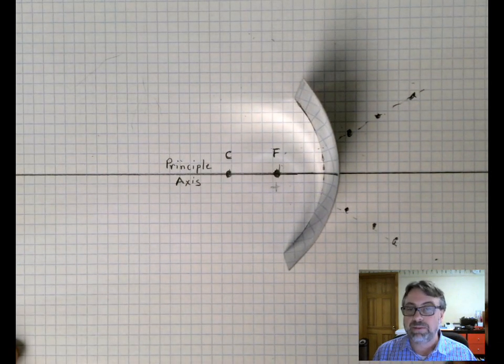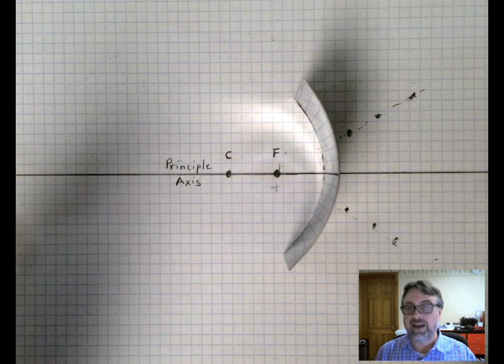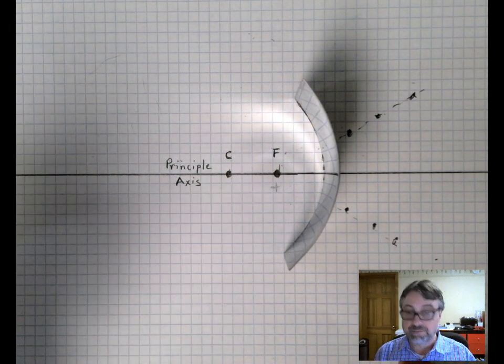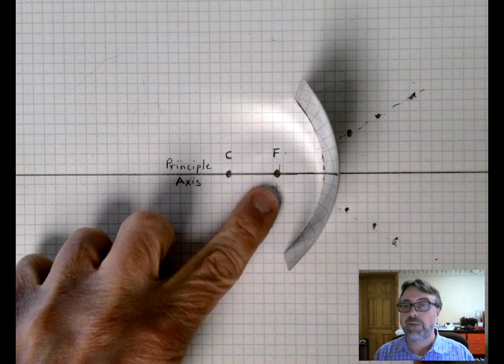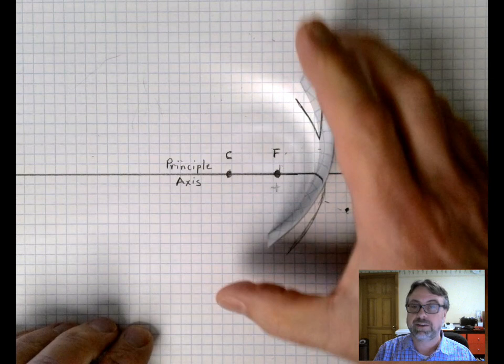I've placed the mirror on the piece of paper so the principal axis goes through the center of the mirror and I pre-measured this is the center of curvature for this mirror and the focal point is halfway between the mirror and the center of curvature.